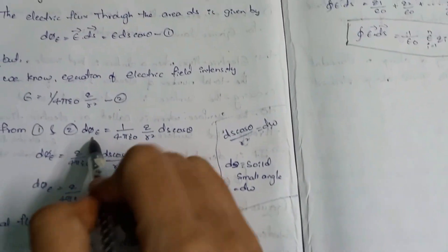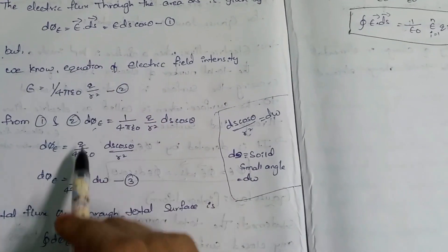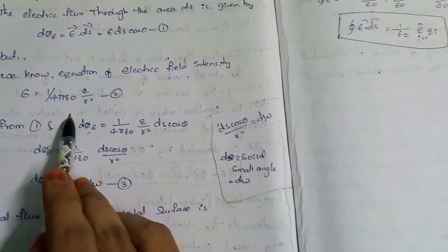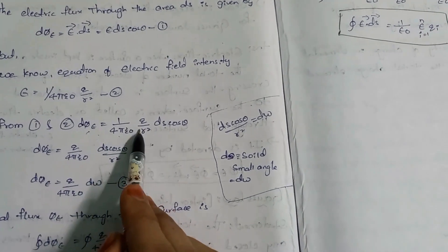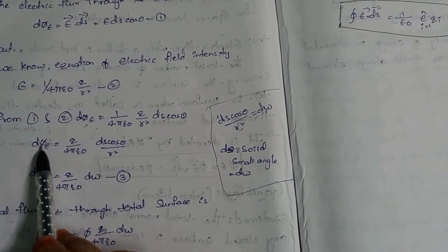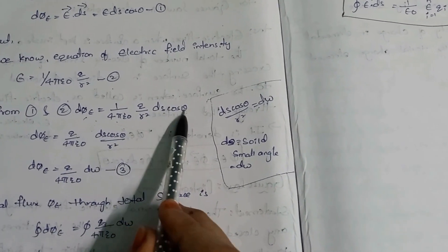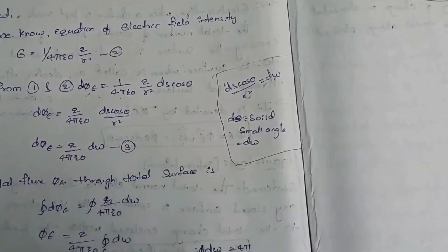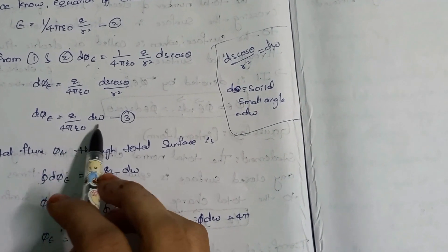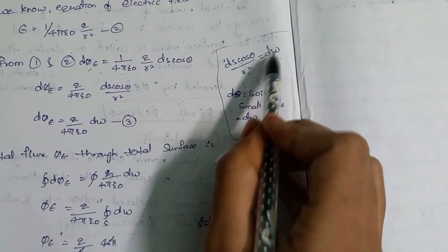From equations 1 and 2, we have dφ = E ds cosθ = (Q/4πε₀r²) ds cosθ. Therefore dφ = (Q/4πε₀) × (ds cosθ / r²). This is equation 3.